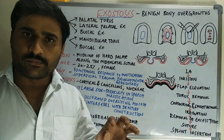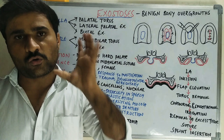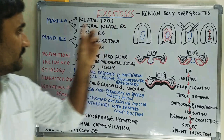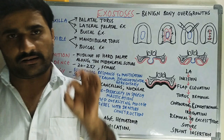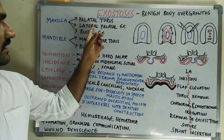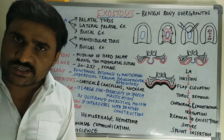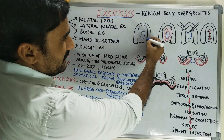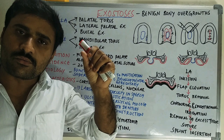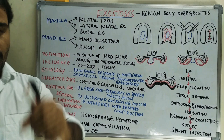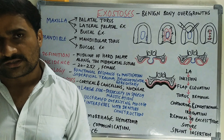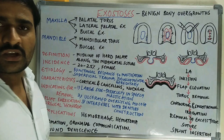In this video we will discuss about exostoses. Exostoses are nothing but benign bony overgrowths — that is the most important definition. These exostoses in the maxilla are divided into three types based on the location they occur: first is palatal torus or torus palatinus, lateral palatal exostoses, and buccal exostoses on the buccal aspect of the alveolar process.